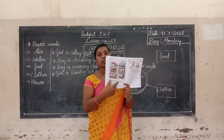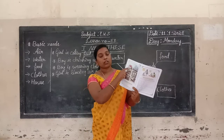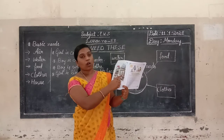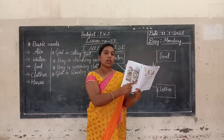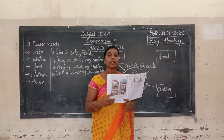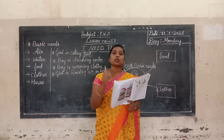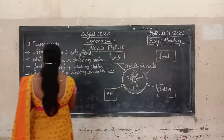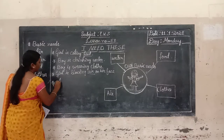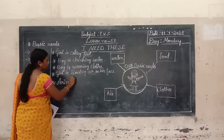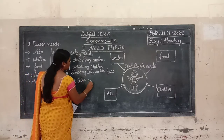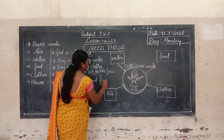You can see here we have animal pictures — cow, buffalo, sheep, elephant, horse, dog. Now you tell me — do these animals need food? Yes, animals also need food. Animals also need food and water.